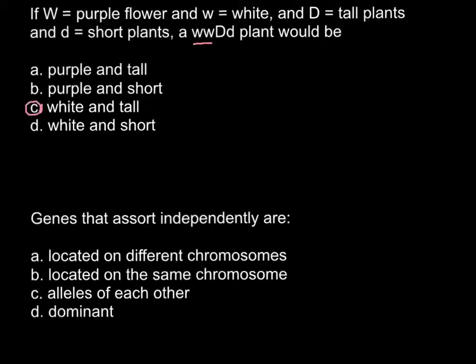The second question states: genes that assort independently are — and you have four answers. Answer D, dominant, is not correct, because it doesn't matter whether alleles are dominant or recessive — it doesn't affect how they are assorted. And answer C, alleles of each other, is incorrect because a gene can be represented by many different alleles, and an allele is just a different form of the same gene.